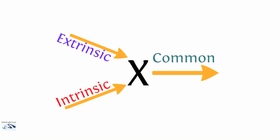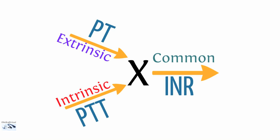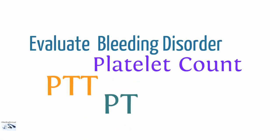All these pathways feed into factor X, which then feeds into the common pathway involving fibrinogen, prothrombin, thrombin, and fibrin. Our extrinsic pathway is measured with PT, our intrinsic pathway is measured with PTT, and the common pathway is measured with the INR — though the INR can also capture abnormalities in the extrinsic pathway as well. This is a brief review of the coagulation pathway and the labs that measure each portion.